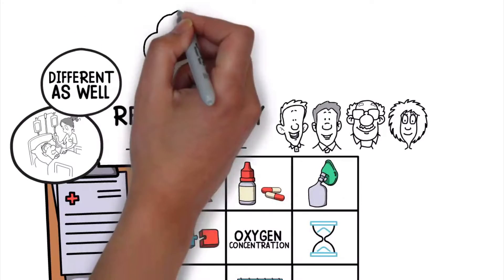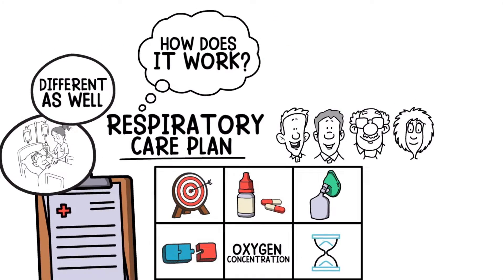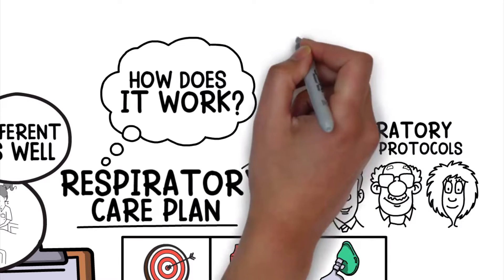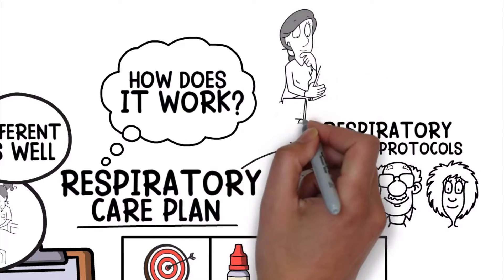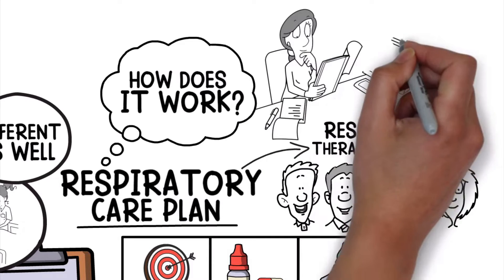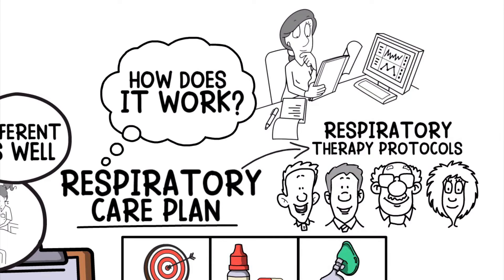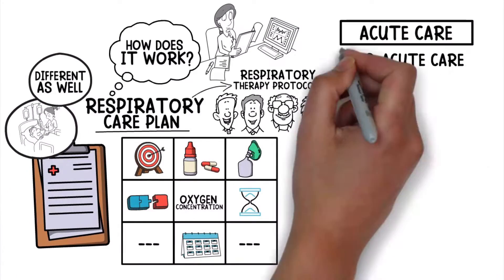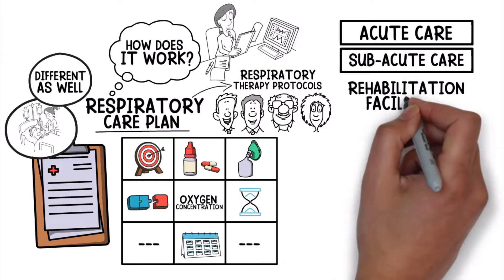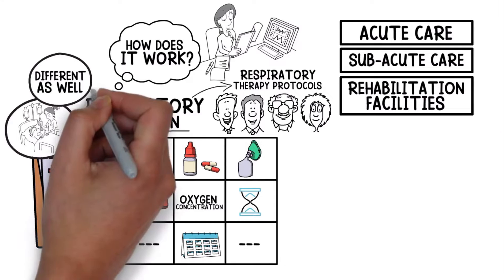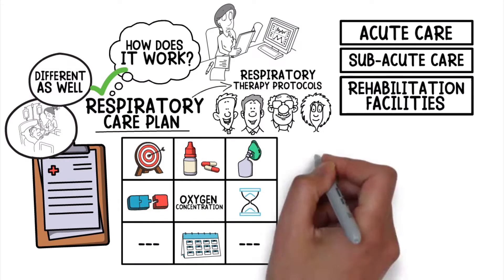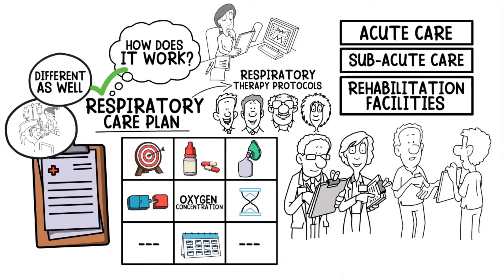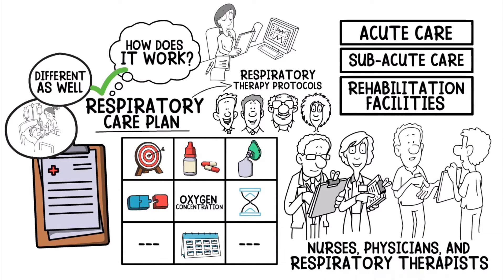You may be wondering, how does a respiratory care plan work? Respiratory care plans work similar to respiratory therapy protocols. They use a multidisciplinary plan to provide the most appropriate types of care to fit an individual patient's needs. Respiratory care plans can be used in acute care, subacute care, and rehabilitation facilities. In order for the plan to be successful, they rely on communication from all medical professionals who are involved, including nurses, physicians, and respiratory therapists.